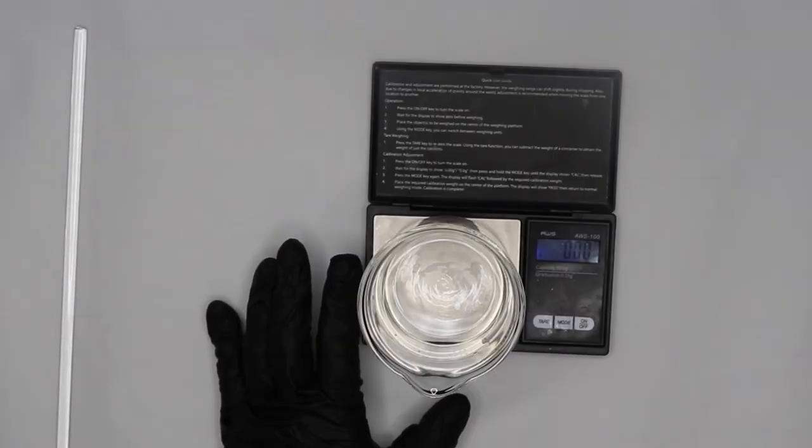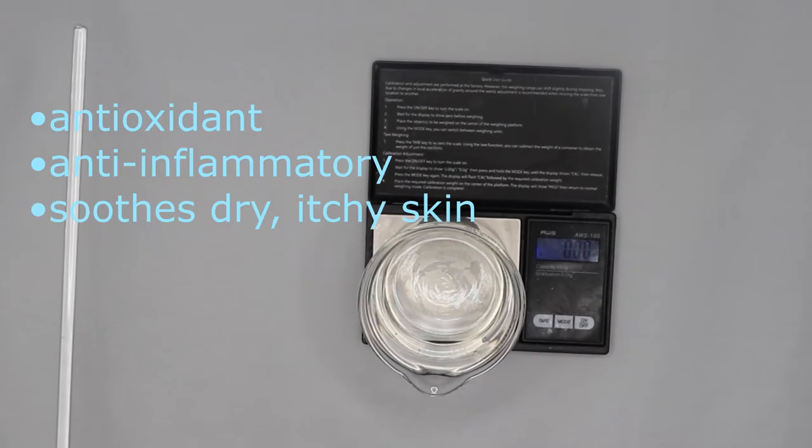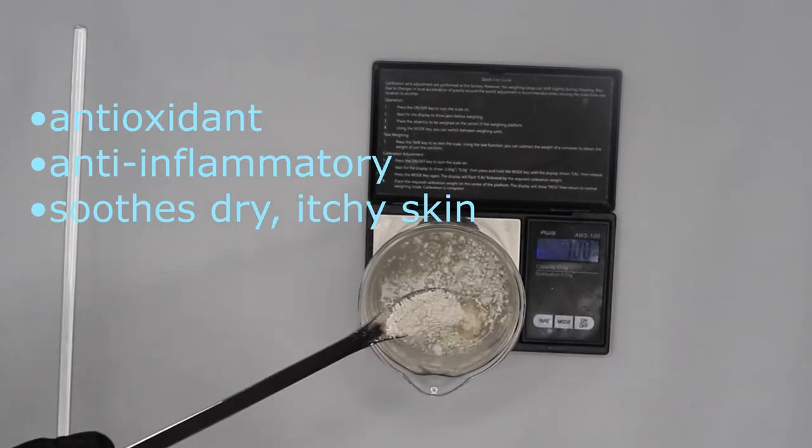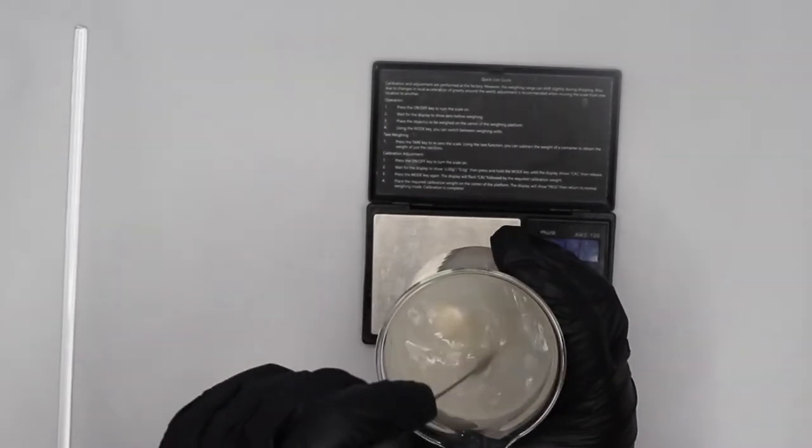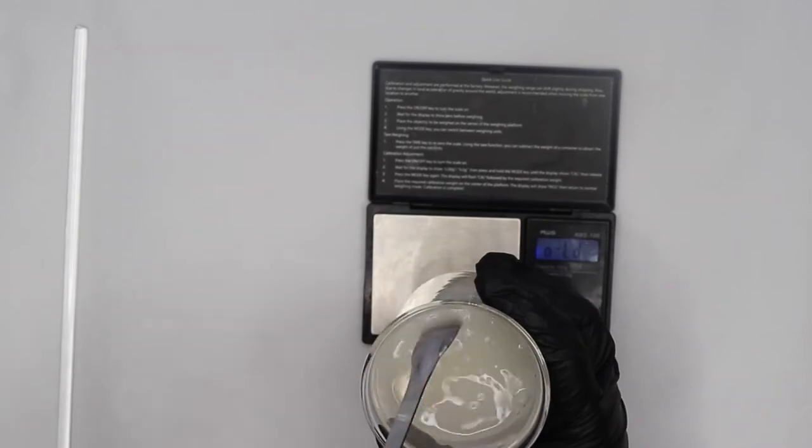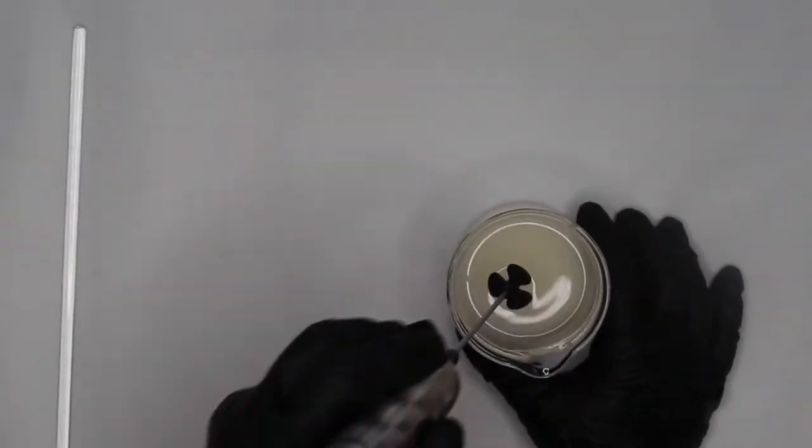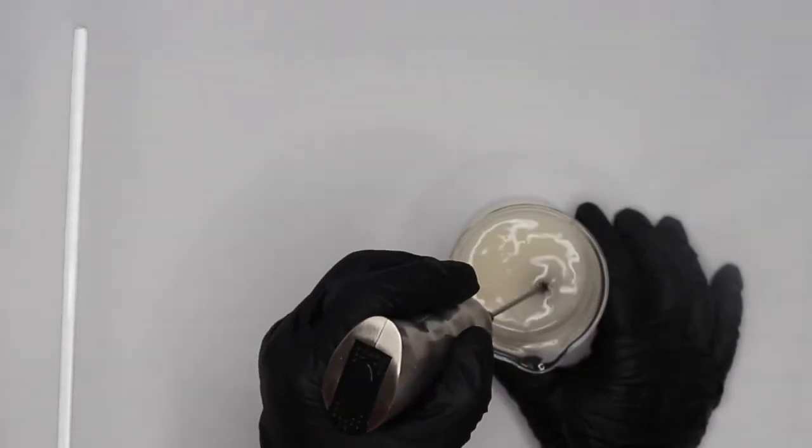I have added 146.4 grams of distilled water, and here I will add 2.4 grams of colloidal oats. You want to make sure you dissolve it before you add anything else. My mini mixer just makes it a lot easier to dissolve the colloidal oats.